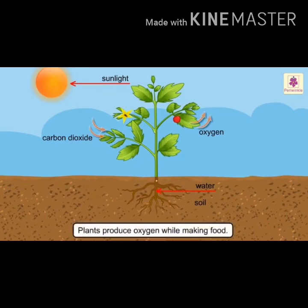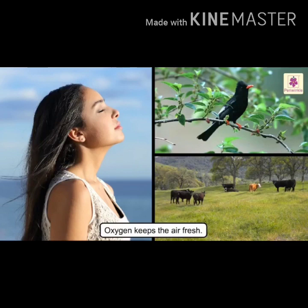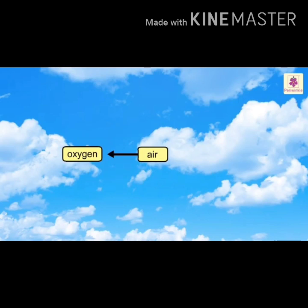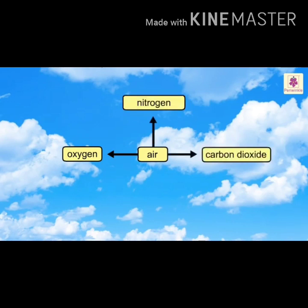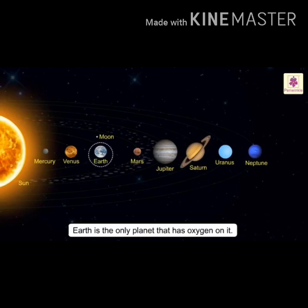One of the reasons why plants are so important to us is because they produce oxygen while making food. Oxygen is the most important gas for all living things, as it is needed to stay alive. It also keeps the air fresh. Along with oxygen, air also contains other gases like nitrogen and carbon dioxide. Did you know Earth is the only planet in our solar system that has oxygen on it?